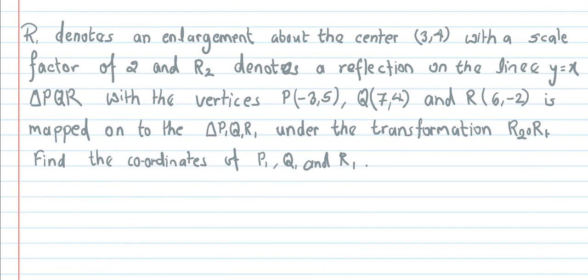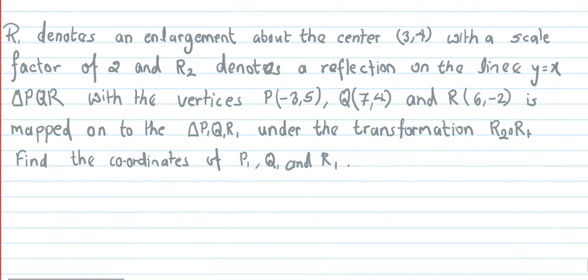R1 denotes an enlargement about the center (3,4) with a scale factor of 2, and R2 denotes a reflection on the line y equals x. Triangle PQR with vertices P(-3,5), Q(7,4), R(6,-2) is mapped onto triangle P1, Q1, R1 under the transformation R2 not R1. Find the coordinates of P1, Q1, and R1.